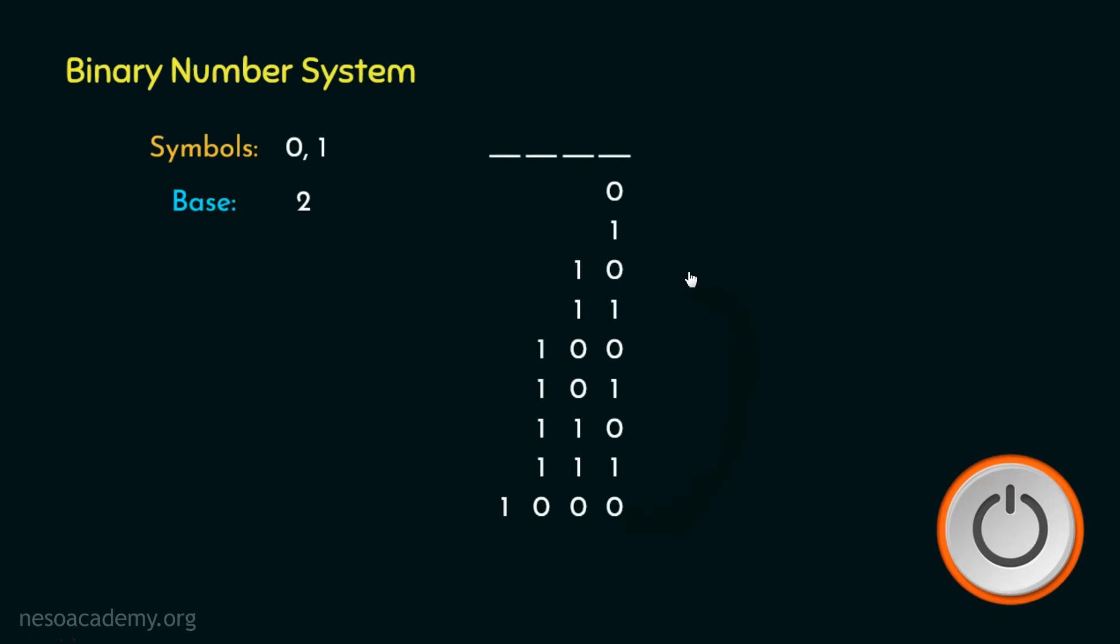Observe what happened. When the bit in the LSB's place changes from zero to one, the remaining bits are the same, like in this, this, this, and this case. Here, in both the numbers, the symbols are one one. Here it is one zero, here it is one, and here it's got nothing. However, when the least significant bit changes from one to zero, we can clearly observe the changes.